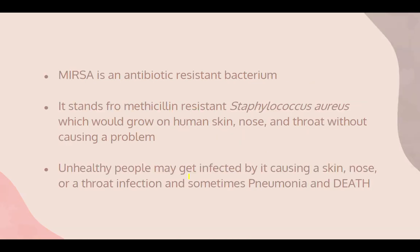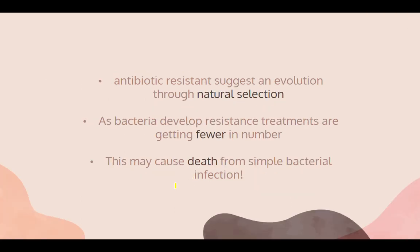A great example of antibiotic resistance is MRSA — an antibiotic-resistant bacterium. You don't need to know its full name, but you should know that it grows on human skin, nose, and throat without causing a problem in healthy people. However, an unhealthy person may get infected, causing skin, nose, or throat infection, and sometimes pneumonia and death. Antibiotic resistance suggests evolution through natural selection — covered in Chapter 19. As bacteria develop resistance, effective treatments are becoming fewer.